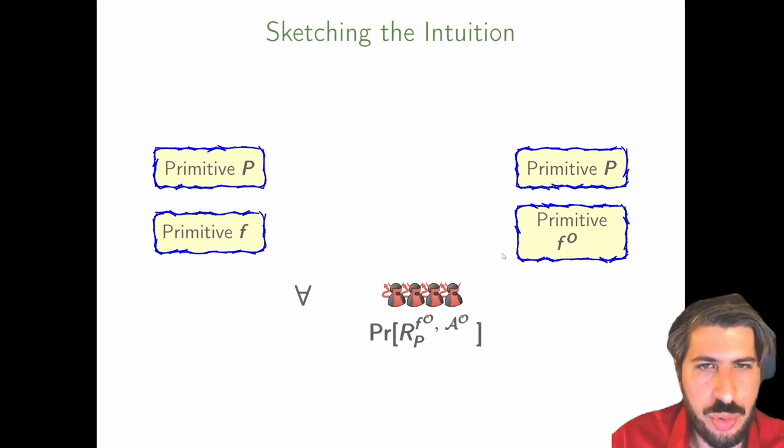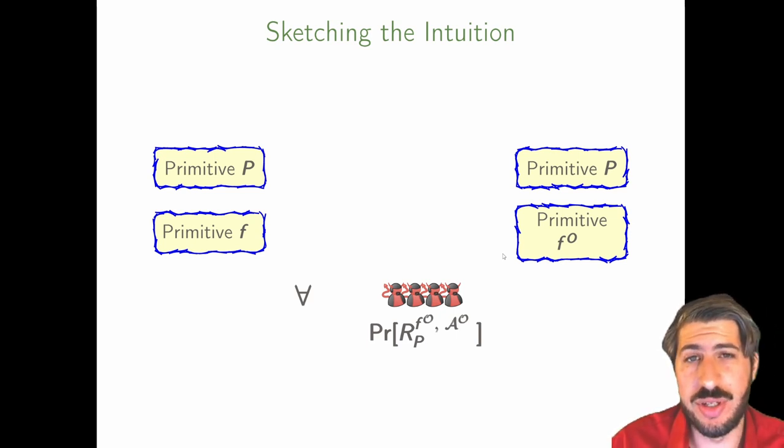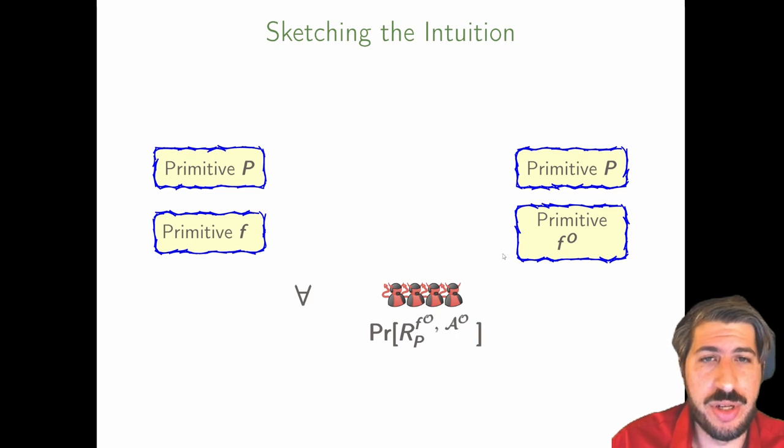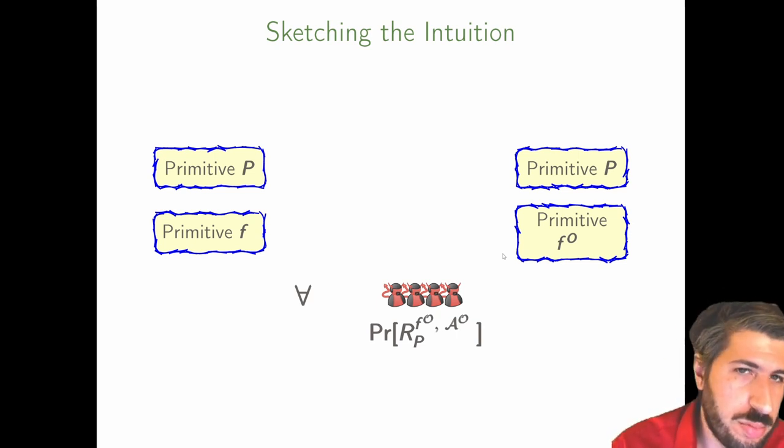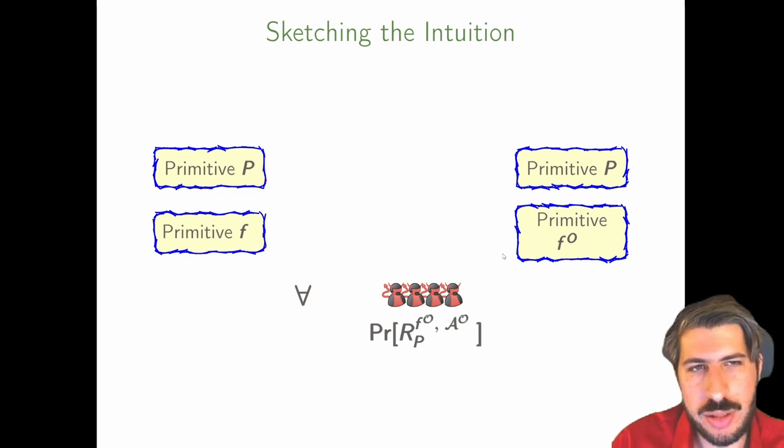At the end of the day, we want to show that the standard model is on the left side and the setup assumption is on the right side. We have a primitive P and some instantiation F of another primitive. And if an adversary, an unbounded adversary in the standard model breaks P, then it will break F. Now that fact, we claim, is enough to show that any adversary, a different adversary with oracle access in the setup assumption that breaks P is also able to break F that has access to O.